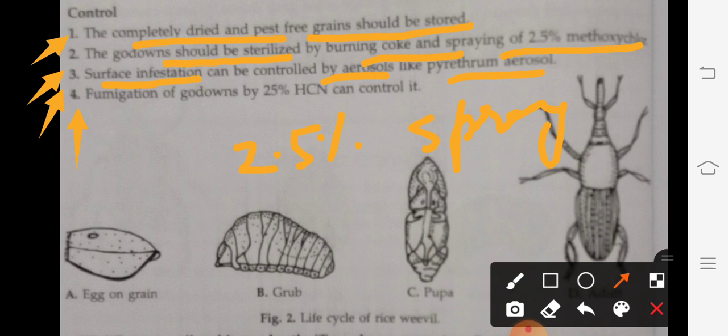And fourth: fumigation of godown by 25% HCN can control it. 25% HCN can be fumigated in the stored grain.